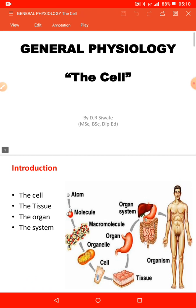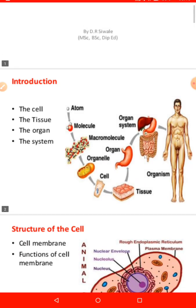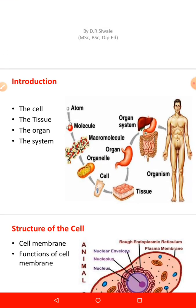Without wasting much time: a cell is defined as a basic unit of life, and all living organisms are composed of many blocks of cells. So a cell is a structural and functional unit of the living body.